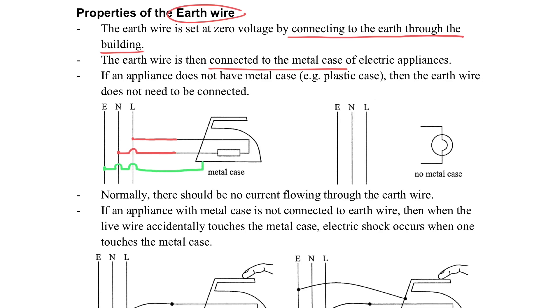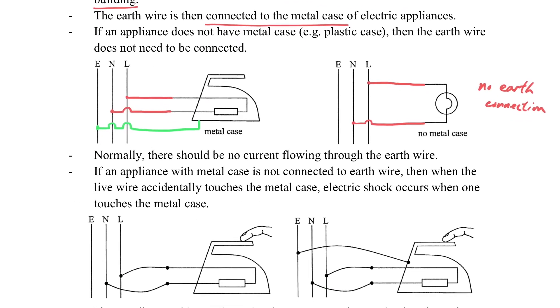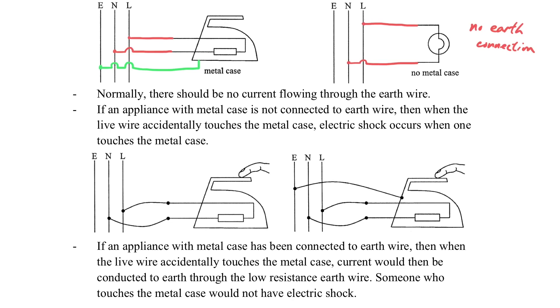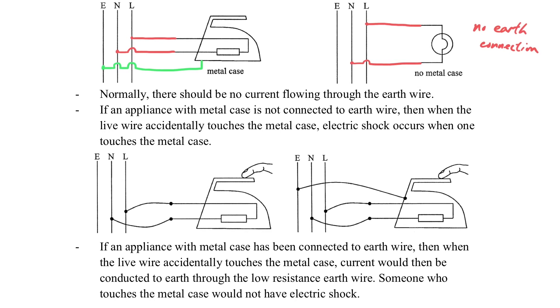Why do we have to connect it to the case? As I have said, if there is no accident, actually it is not useful. For example, if we have a lamp on the right hand side with no metal case, we need not have the earth connection. That means we need not have an earth wire. Once again, what is the use of the earth wire?